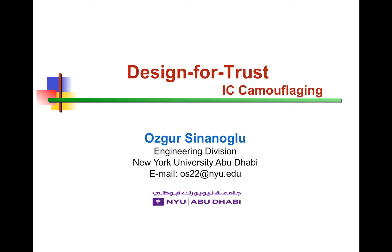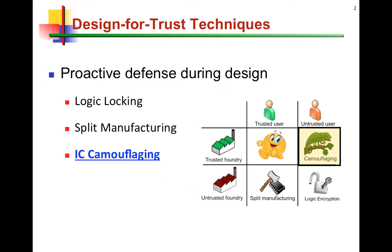The next presentation module is on IC camouflaging, another design-for-trust technique. This time, the threat model is different than logic blocking and split manufacturing. This time, the untrusted entity is the end user.